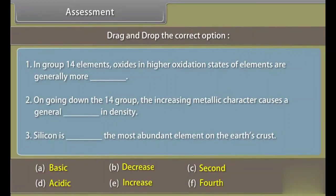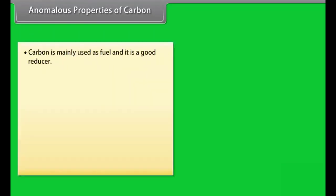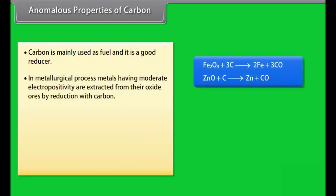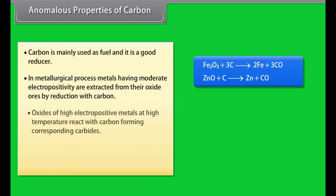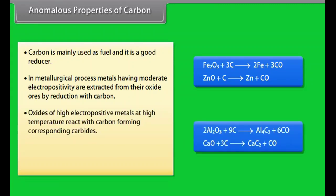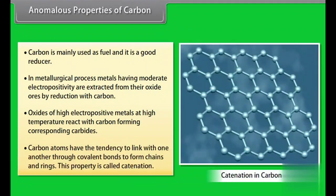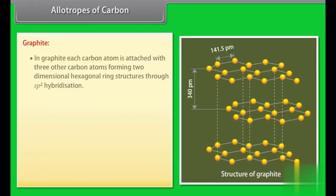Assessment. Before proceeding further, let us know how much have you learnt. Drag and drop the correct option. Anomalous properties of carbon. Carbon is mainly used as fuel and it is a good reducer. In metallurgical process, metals having moderate electropositivity are extracted from their oxide ores by reduction with carbon. Oxides of high electropositive metals at high temperature react with carbon forming corresponding carbides. Carbon atoms have the tendency to link with one another through covalent bonds to form chains and rings. This property is called catenation.